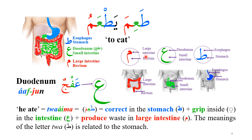We have also seen that Twa is related to the stomach and esophagus. The straight part of the letter refers to the esophagus, while the curved part represents the stomach. The ayn matches the duodenum and the rest of the small intestine, and meem matches the large intestine. Half june means the duodenum itself, so the meaning of Twa is deeply related to the intestines and stomach.